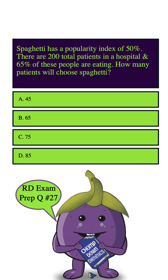Let's highlight our key words: popularity index of 50%, 200 total patients, 65% of these people are eating, and how many patients will choose spaghetti.